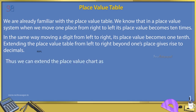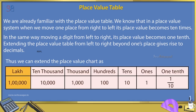Thus, we can extend the place value chart as: 100s, 10s, 1's, 1 tenth — extending the chart to the right of the ones place to represent decimal values.